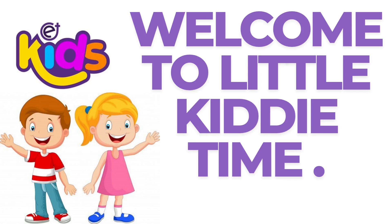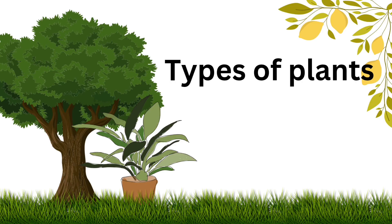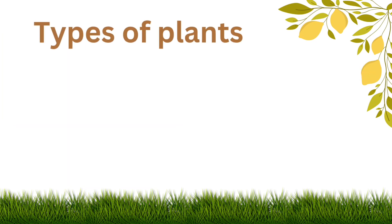Welcome to Little Kiddie Time. Types of Plants — we see many types of plants. These are of different shapes and sizes. Some are big, while some are small. Primarily, there are five types of plants.